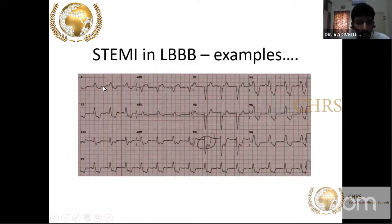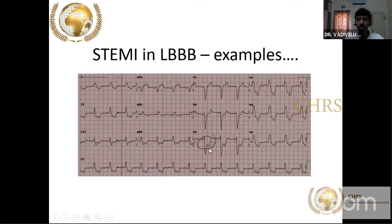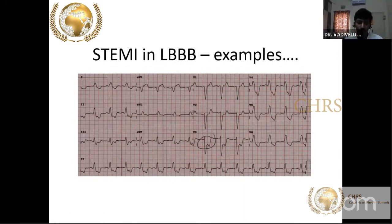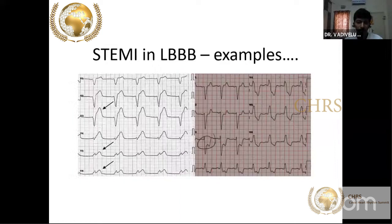In left bundle branch block — identified by monophasic R in lead I and AVL, negative QRS in V1, and monophasic R in V5 and V6 — if there is ST segment depression in anterior leads V1 to V3, that is very significant and suggests new onset ischemia.